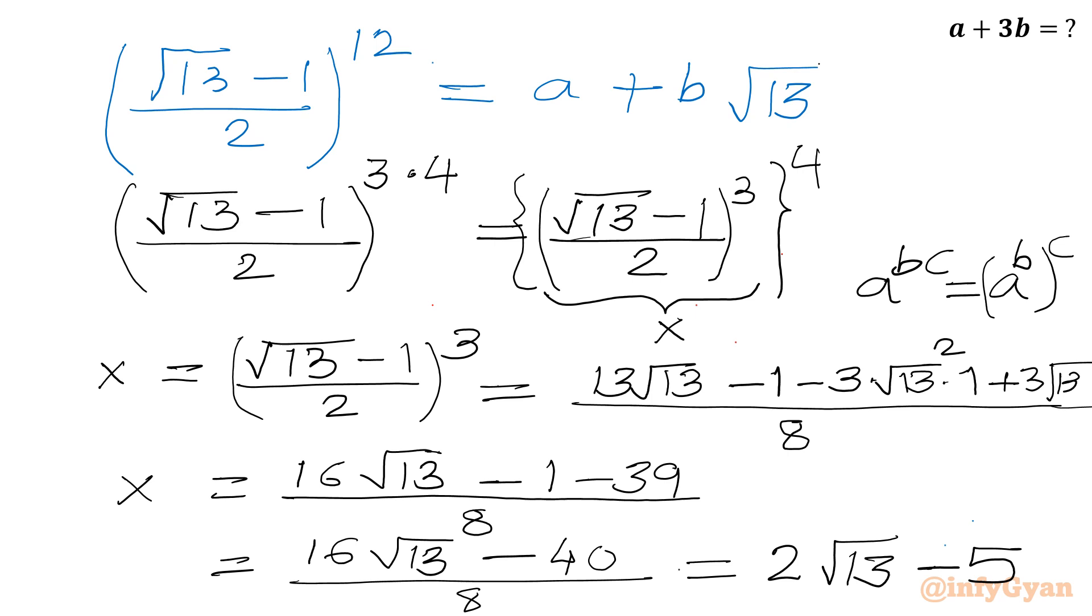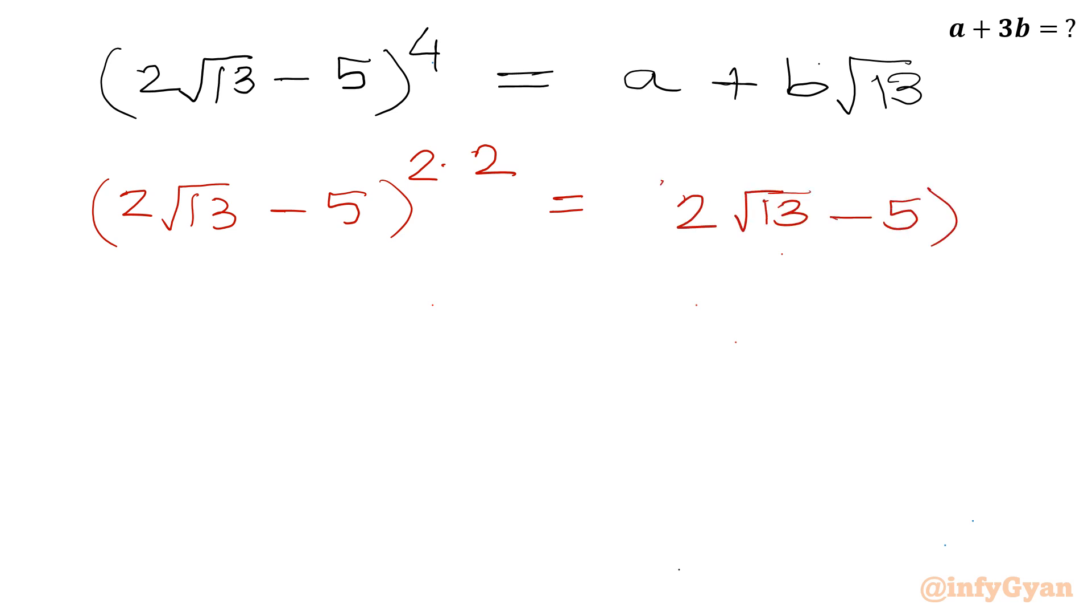So we need to find out its power 4. As you can see we have calculated x value 2 root 13 minus 5. So I will be writing 2 root 13 minus 5 whole power 4. Now it is equal to a plus b root 13. So let us calculate power 4. I will factorize. I will write like 2 root 13 minus 5 whole power is 2 times 2. Again using the same property I can write 2 root 13 minus 5 whole square, and then we will consider again whole square.